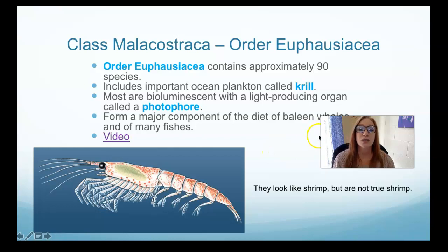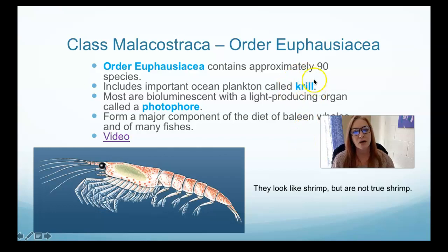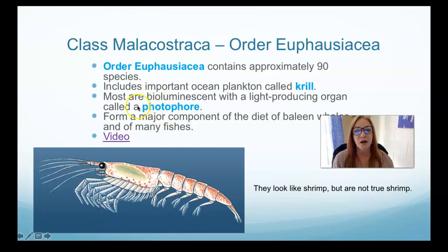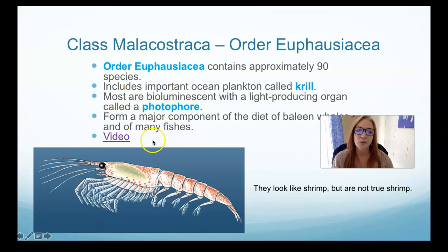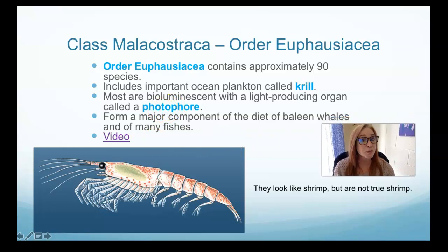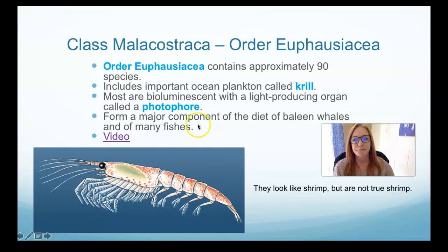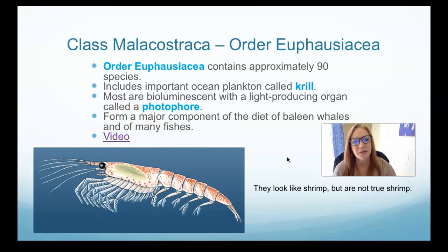Next is Malacostraca Euphausiacea. They look like shrimp but are not true shrimp. They are called krill — one of the most important species in the world, as the whole ocean is kind of based on them. There are 90 different species. They are bioluminescent, producing little light flashes in the ocean from an organ called the photophore. They are the main source of food for the largest whales in the world, including blue whales. There's a video I'll link under this one.